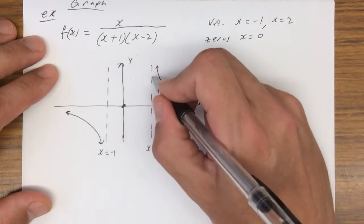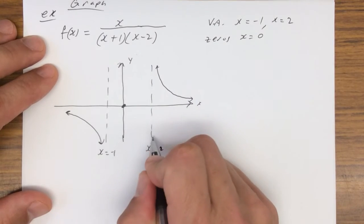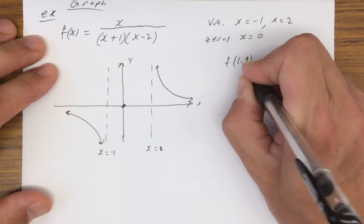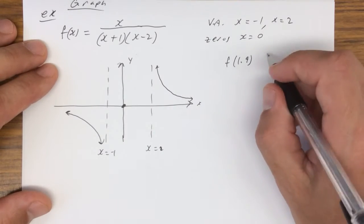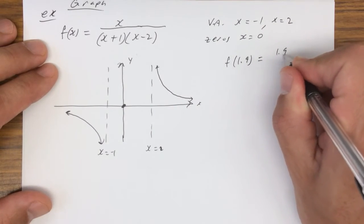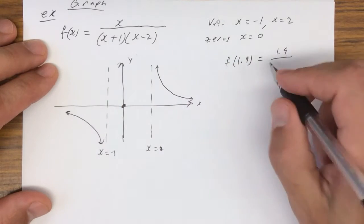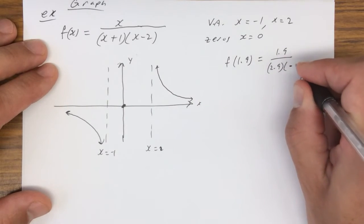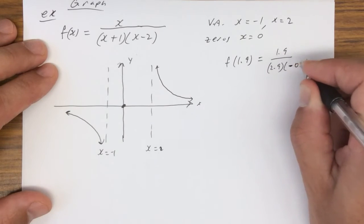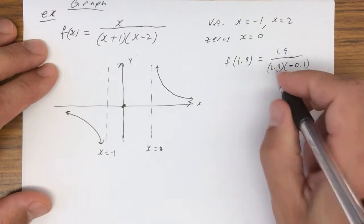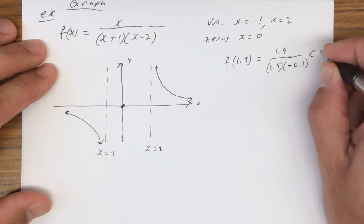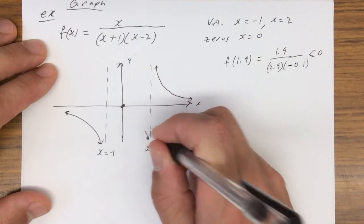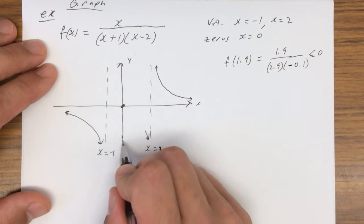This is where we look at values right around the asymptotes. Look at a value just to the left of x equals 2, which would be 1.9. So f(1.9) is going to be 1.9 over (1.9 plus 1), which is 2.9, times (1.9 minus 2), which is negative 0.1. The sign of this is negative, so because it's less than 0, we know the graph comes down here.